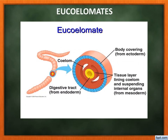Eucoelomate means the true coelom is present. The three layers are ectoderm (outermost), endoderm (innermost), and mesoderm (middle). In the mesoderm layer, a cavity forms — that is the coelom. This is called eucoelomate. The true coelom is found from Annelida onwards. Platyhelminthes is acoelomate, Aschelminthes is pseudocoelomate, and the rest are eucoelomates.